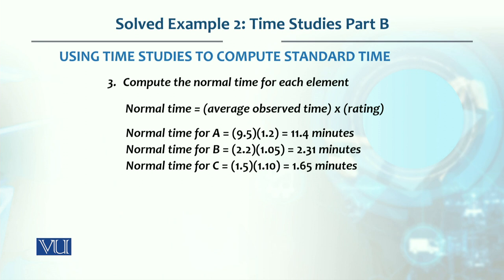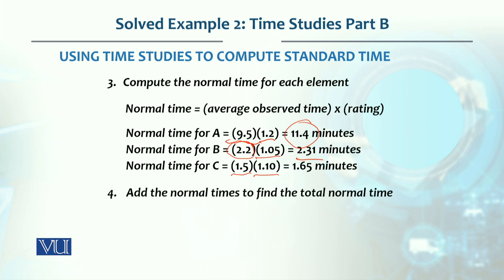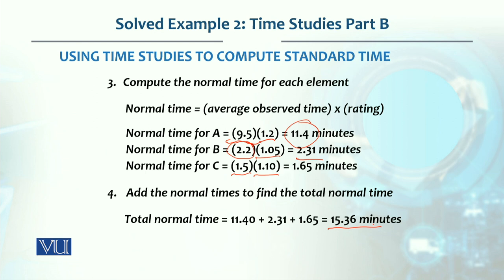So for work element A, average time 9.5 minutes multiplied by rating factor 1.2 gives normal time 11.4 minutes. For work element B, 2.2 times 1.05 gives 2.31 minutes. For work element C, 1.5 times 1.1 gives 1.65 minutes.